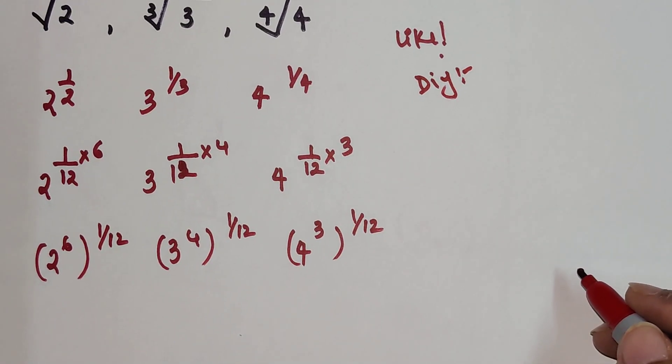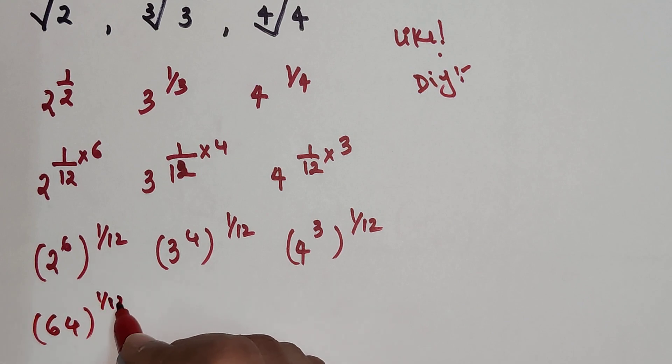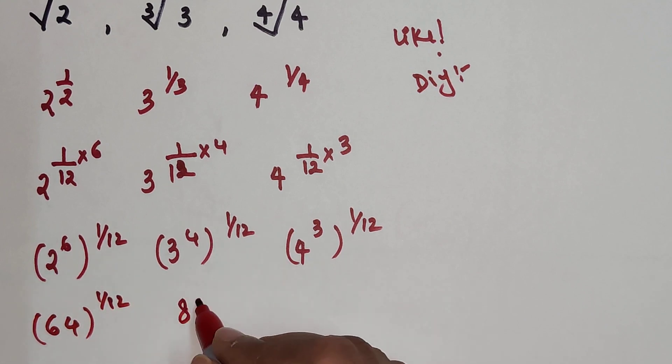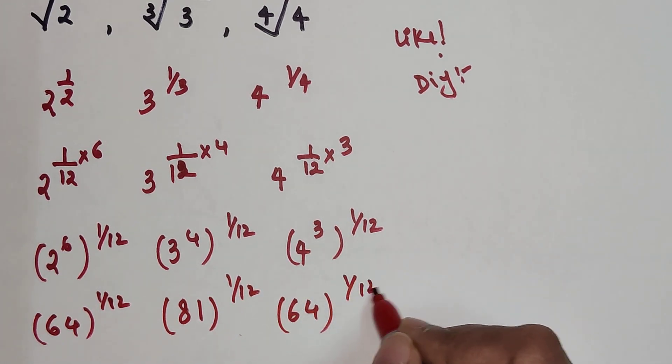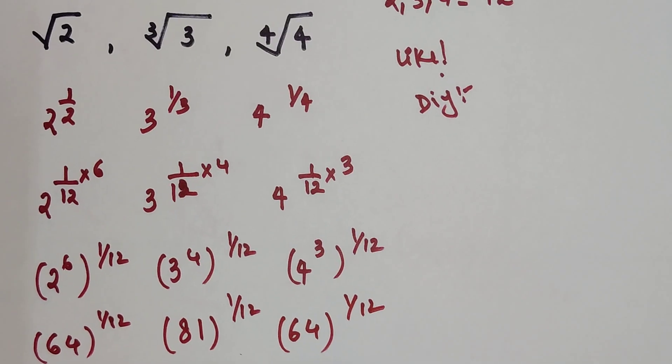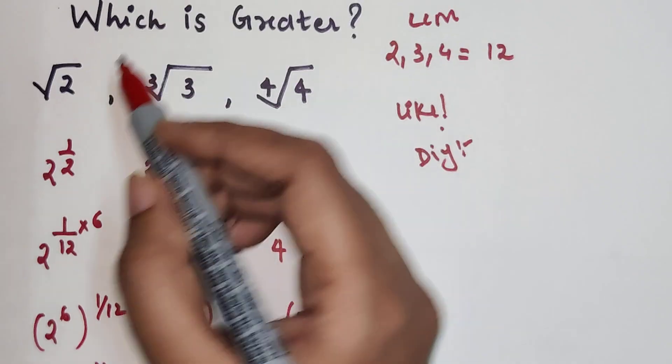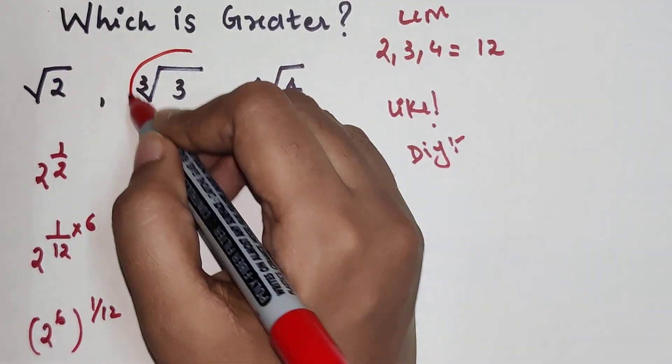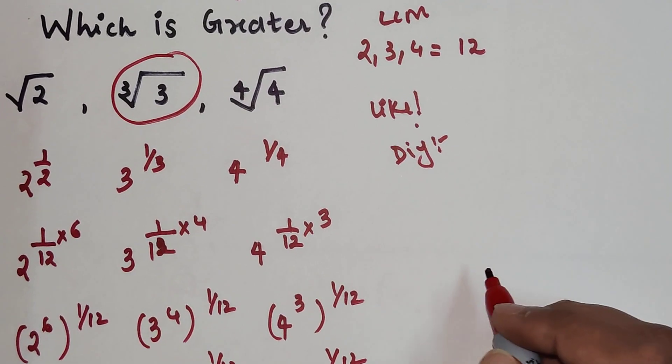So now, 2 raised to 6 is 64, the whole raised to 1/12. 3 raised to 4 is 81, the whole raised to 1/12. 4 cube is also 64, the whole raised to 1/12. Out of these, I can say 81 is the greatest, so cube root of 3 is the greatest value.